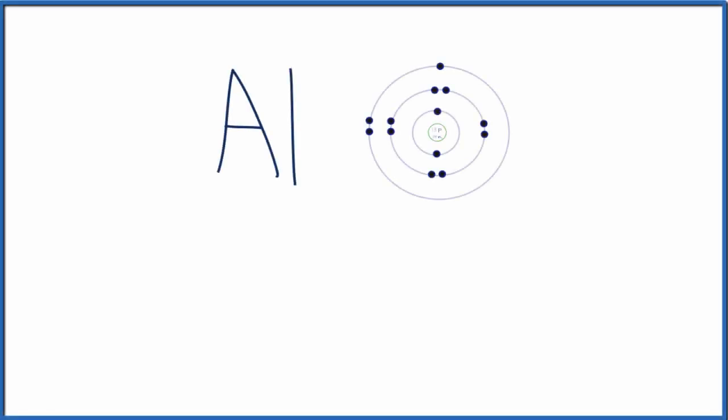In this video, we'll draw the Lewis structure for Al3+, the aluminum ion. Before we do that, let's do the Lewis structure for aluminum, and then that will help us understand Al3+.